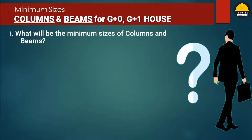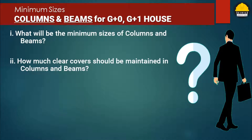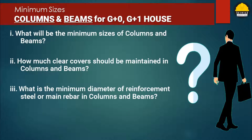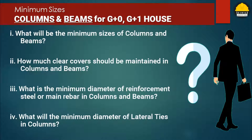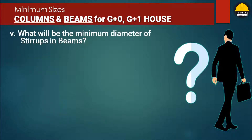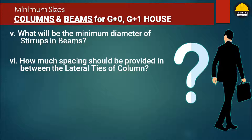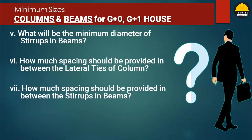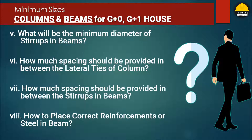In this video we will particularly look into: what will be the minimum sizes of columns and beams, how much clear cover should be maintained, what is the minimum diameter of reinforcement steel or main rebar, what will be the minimum diameter of lateral ties in columns and stirrups in beams, how much spacing should be provided between lateral ties and stirrups, and how to place correct reinforcement in beams.